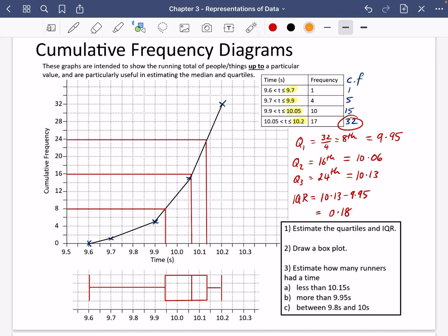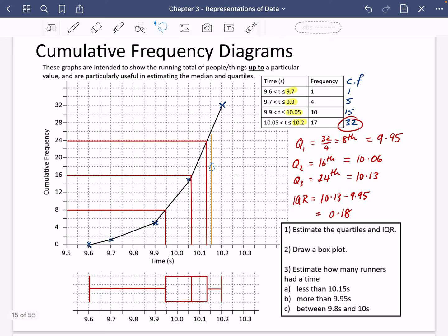And I'm going to draw a line up from 10.15 until we get to the black line. That's a little bit wonky. So I'm going to do it this way here. Hopefully it will be a little bit better.